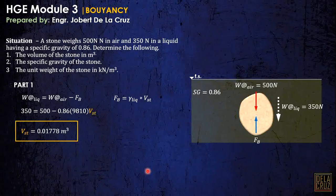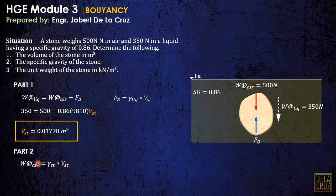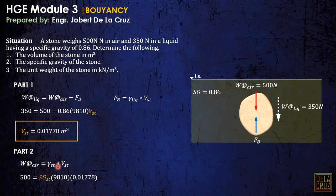For part 2, find the specific gravity of the stone. The weight in air equals gamma of the stone times the volume of the stone — this is the actual weight. Using the volume already calculated, cross-multiply to find gamma of the stone. Since gamma of the stone equals SG of the stone times gamma of water, we can calculate the specific gravity of the stone.